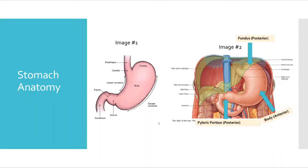Image number one is shown to describe the anatomy of the stomach and its different sections. These sections of the stomach are important to know in distinguishing how to identify the position of a patient in an upper GI procedure. The fundus is the most superior portion, the body is the middle portion, and the pylorus is the most inferior portion of the stomach that connects to the duodenum.